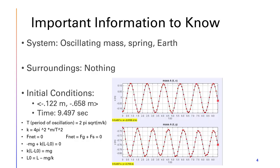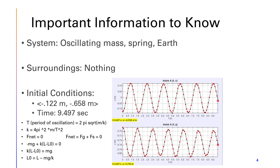Some important information to know is that the system is the oscillating mass, the spring, and the earth, and the surrounding would be nothing as this is a closed system. The initial conditions would be the initial position at negative 0.122 meters in the x direction and negative 0.658 meters in the y direction. The overall time oscillating in this given lab would be 9.497 seconds. With the given information, we could find T, which is the period of oscillation, which is 2 pi times the square root of mass over k, which is the spring constant.